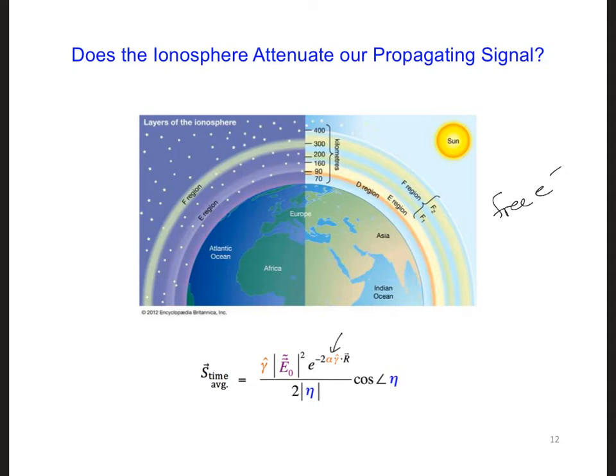as in conductors where there is ohmic heating as a result of electrons colliding with other atoms in the conductor, in the ionosphere there is going to be signal loss due to the collisions of electrons with other electrons, ions, and molecules.